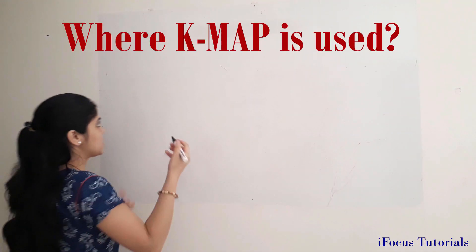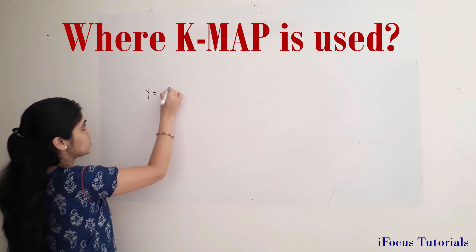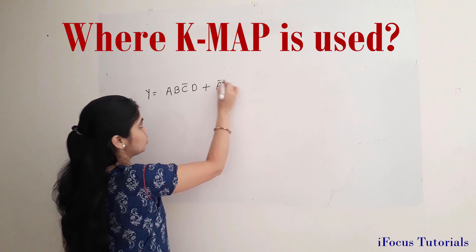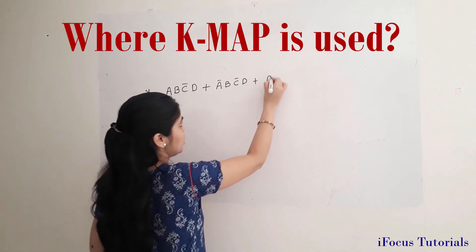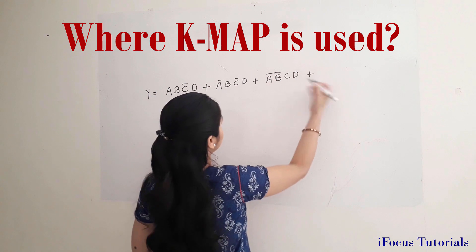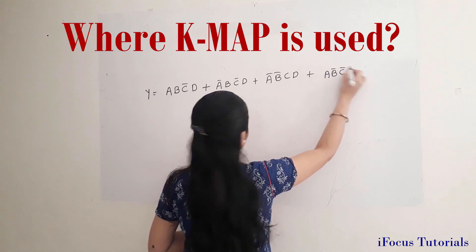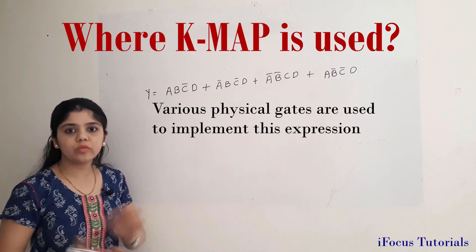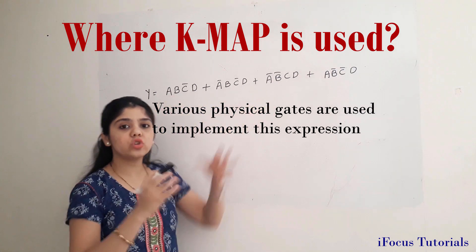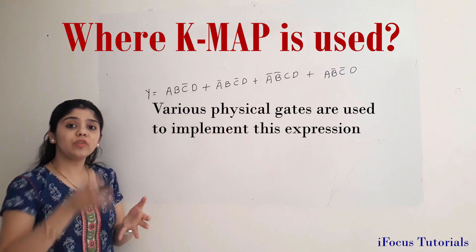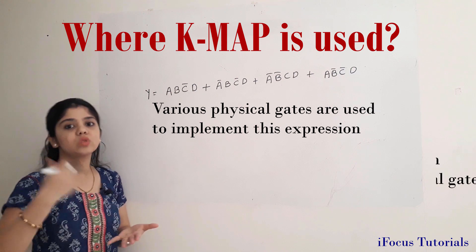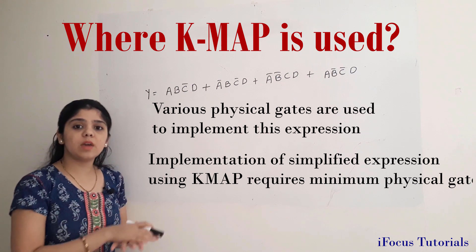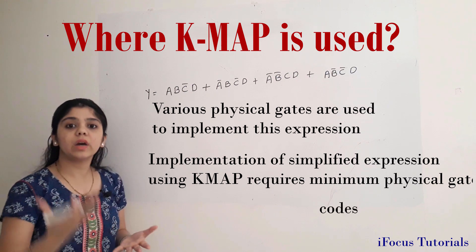If I take a four-variable example, this is my entire expression with four terms. If you take this example without simplification, you will require a large number of physical gates. But if I solve this expression using a KMAP and implement that simplified expression, then of course I will require a minimum number of physical gates. Also, KMAP is used in a variety of error detecting codes.